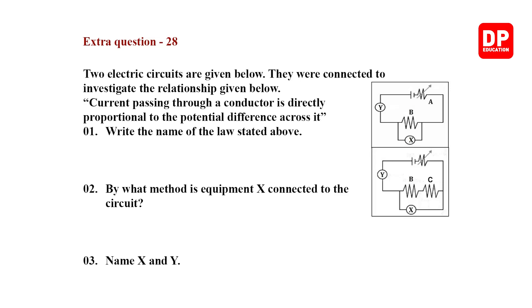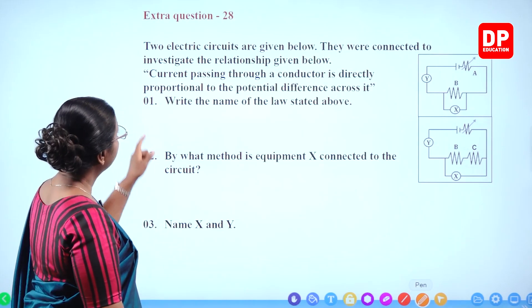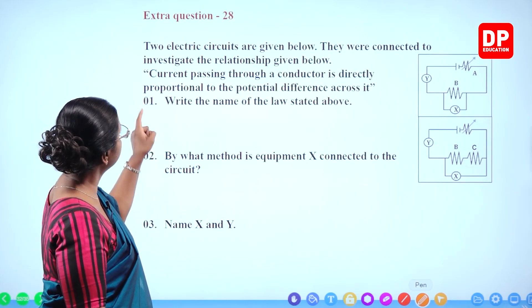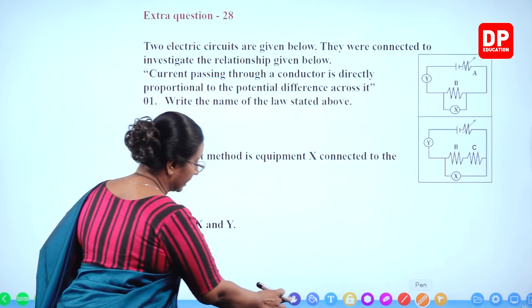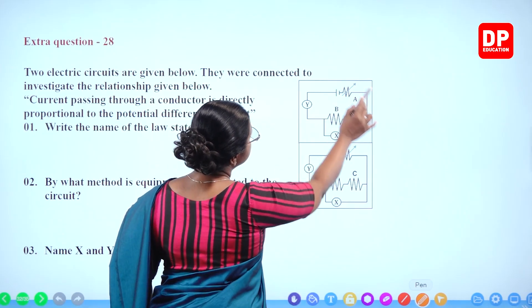Extra question 28: two electric circuits are given. They were connected to investigate the relationship: current passing through a conductor is directly proportional to the potential difference across it — the Ohm's law relationship. We will now look at the two circuits.